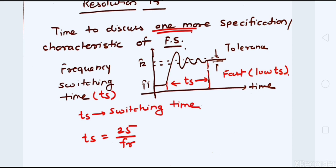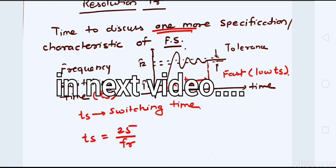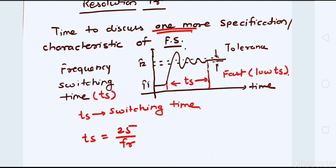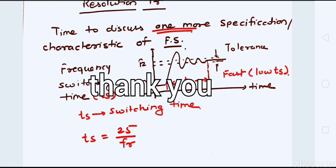Now you can see the conflicting requirement: to make the system fast, TS must be low, so FR must be high — but a high FR means worse resolution. Conversely, if I decrease FR to improve resolution, TS becomes larger and switching time from F1 to F2 increases, hurting speed. This is the trade-off between TS and FR that must be balanced in a frequency synthesizer design.